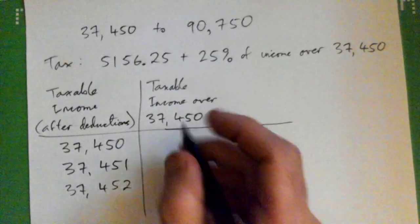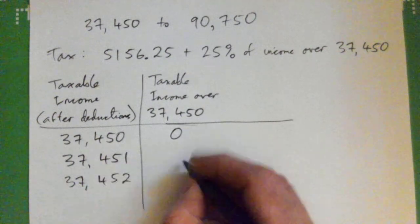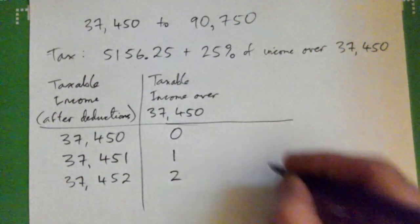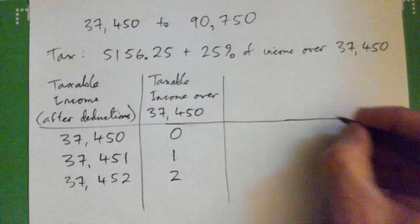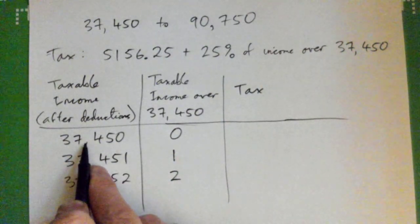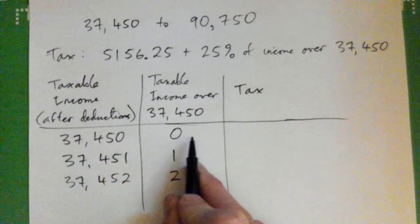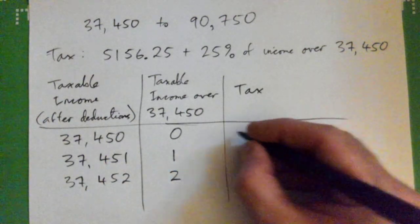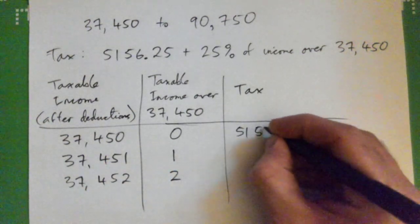Taxable income over that would be zero, this is one dollar over, that's two dollars over. Then we look at the tax we pay. If this is exactly your taxable income, there's nothing over that, so your tax is just exactly the $5,156.25. Make sense?